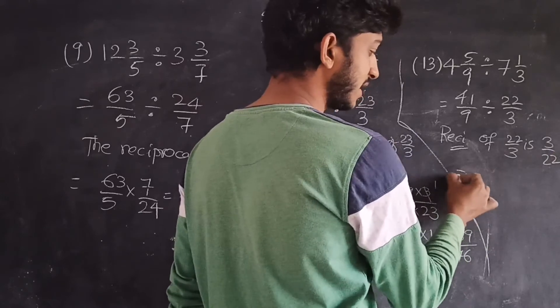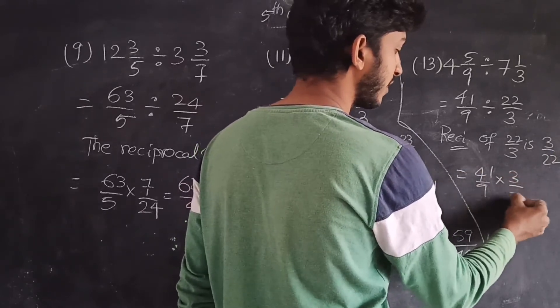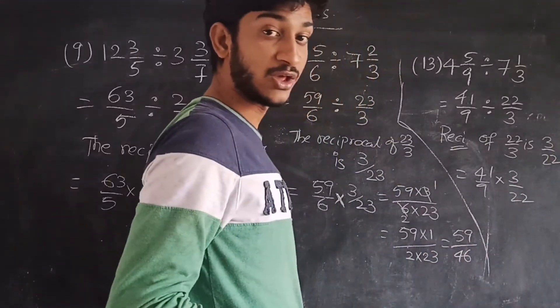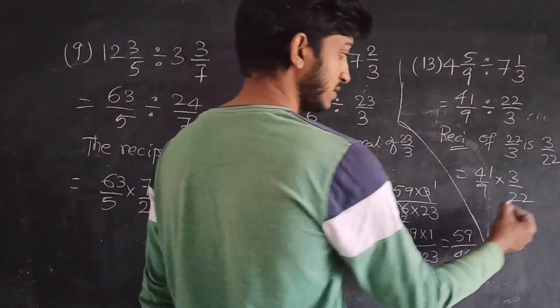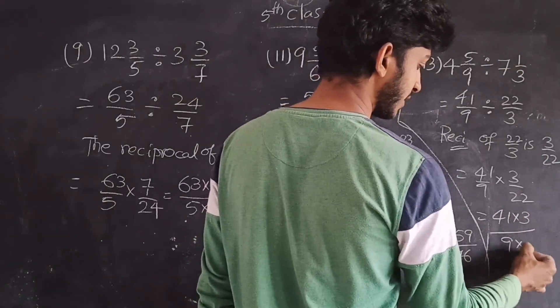Okay, now multiply. 41 by 9 into 3 by 22. Numerator into numerator and denominator into denominator means 41 into 3 by 9 into 22.